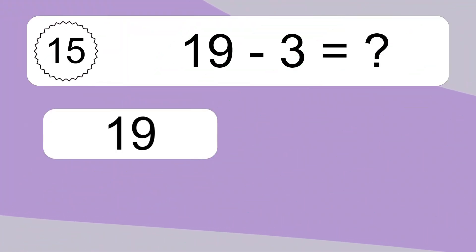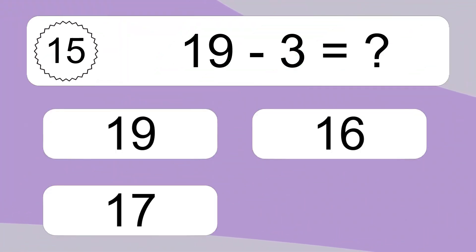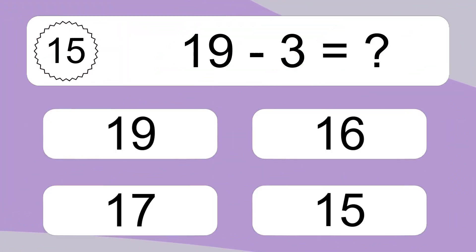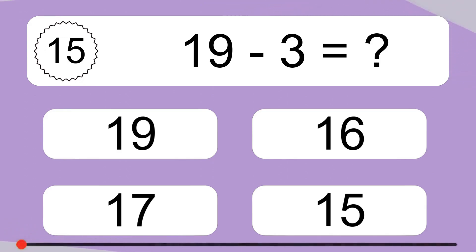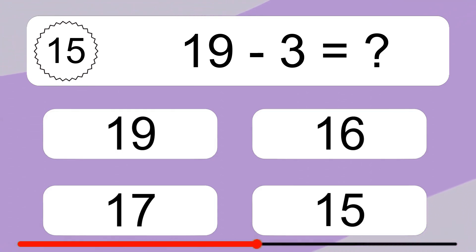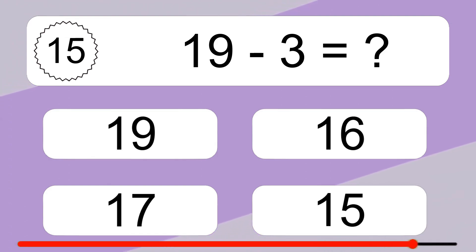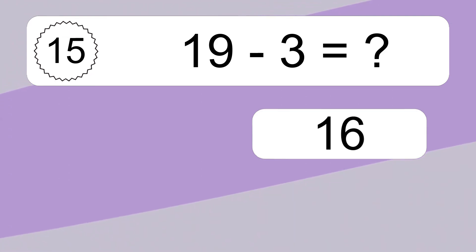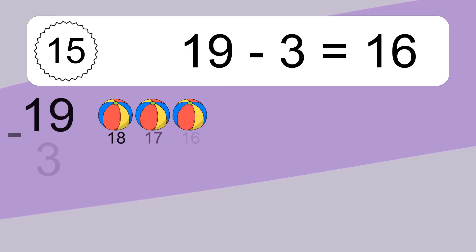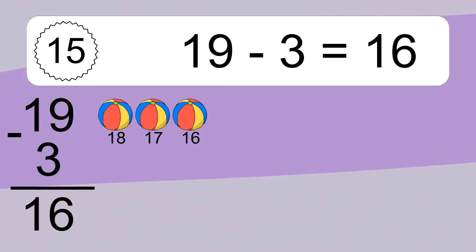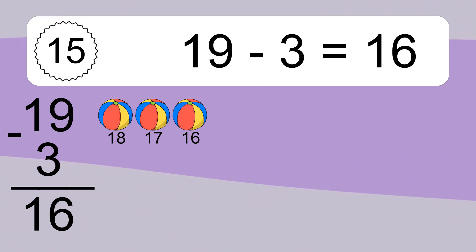19 minus 3 equals what? 19 minus 3 equals 16. Let's count it. 18, 17, 16.